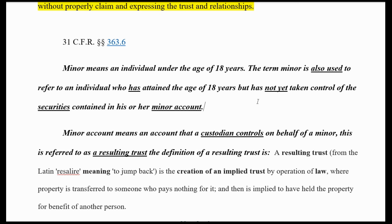The same thing happens. The res is the property. When you give up the name, they'll make a claim to your birth estate — and they put a bond on it. All this stuff is financial terms in court. It has res, it has a trustee, and it has a beneficiary. The term minor is also used to refer to an individual who has attained the age of 18 but has not yet taken control of securities — those are beneficial interests certificates — contained in her minor account, whatever res is in the account.